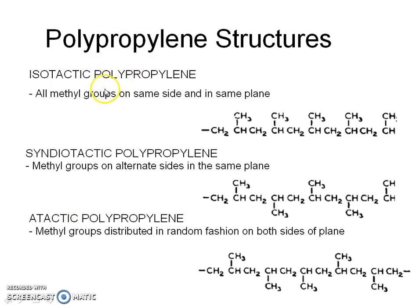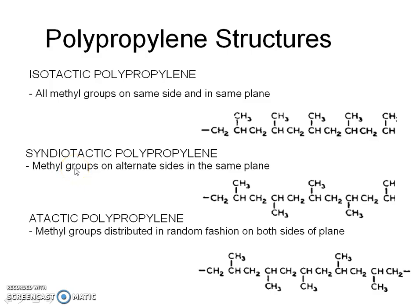In isotactic polypropylene, all methyl groups are on the same side and in the same plane. As seen in the molecular structure, all methyl groups are attached on the same side of the chain, that is the top side of the molecular chain.